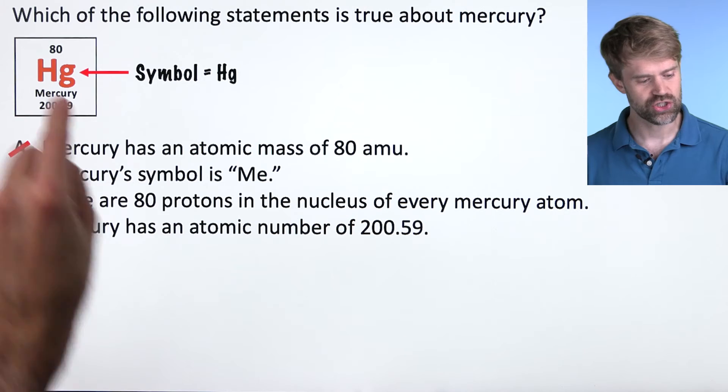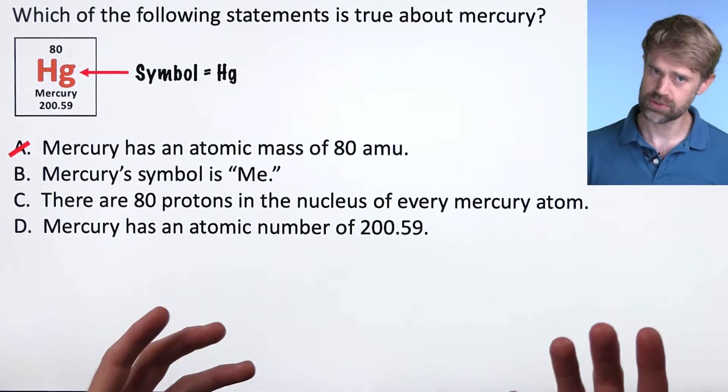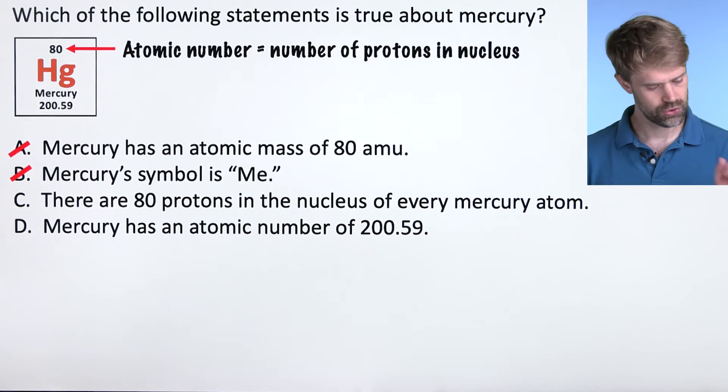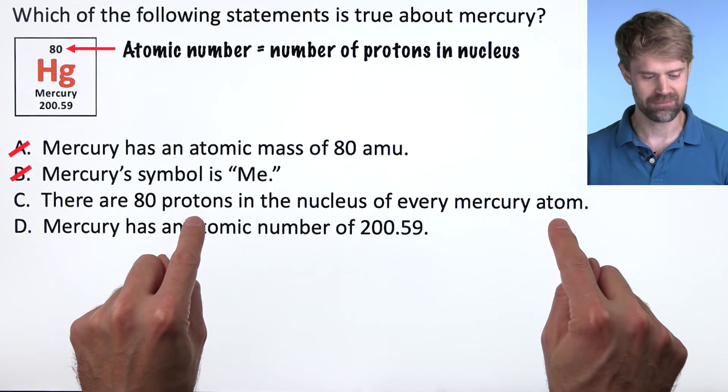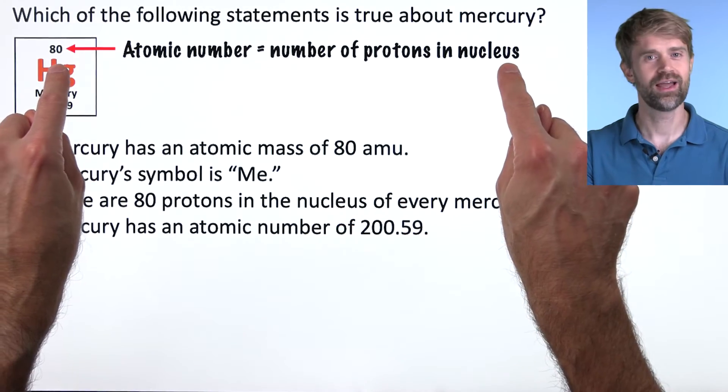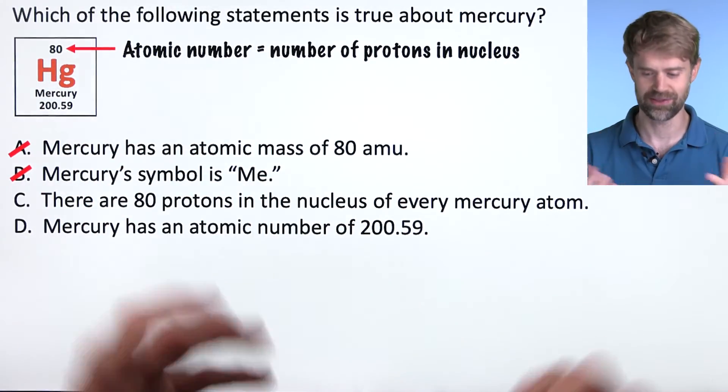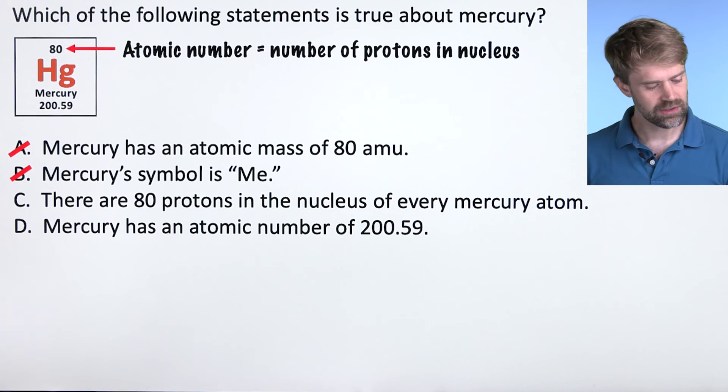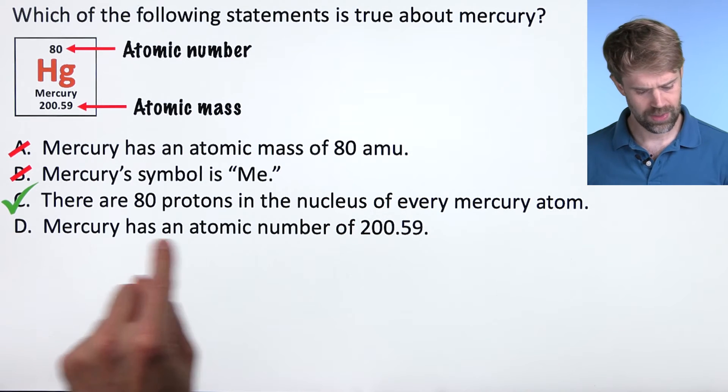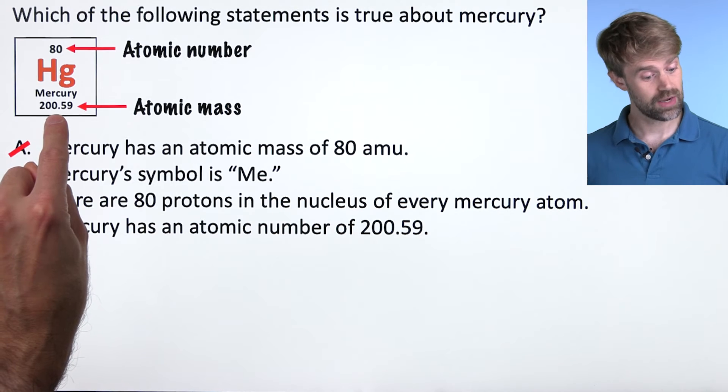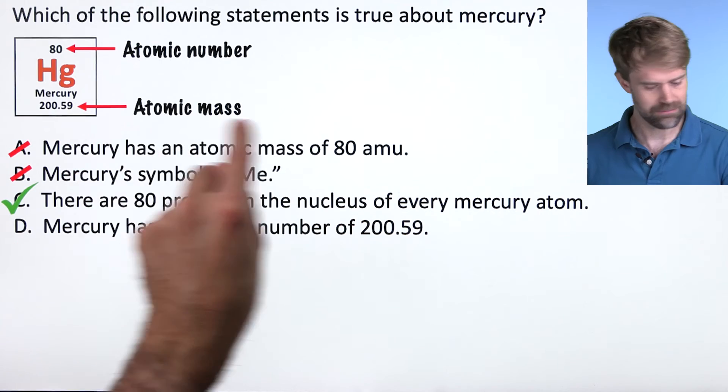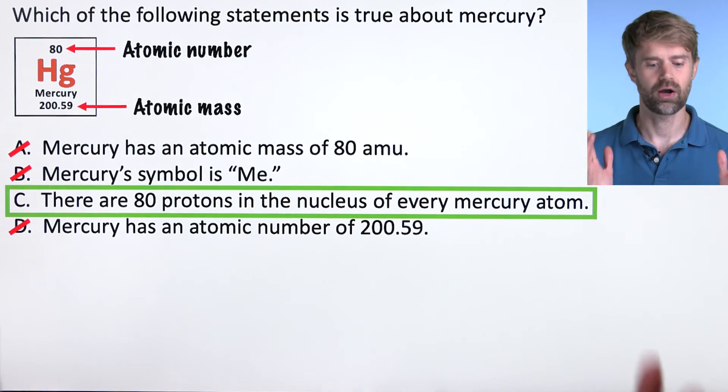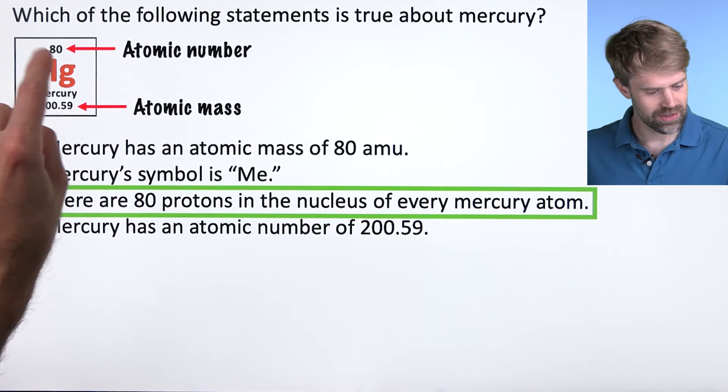Now, HG is a little weird for Mercury, but some of the symbols on the periodic table are like that. They're kind of weird and we talk about that in another video. Anyway, B is wrong, so cross it off. Choice C says there are 80 protons in the nucleus of every Mercury atom. Well, remember what atomic number means? It's the number of protons in the nucleus. This defines the element. So Mercury always has 80 protons in the nucleus. This is our correct answer, but let's just take a look at D to be sure. And it says Mercury has an atomic number of 200.59. That's the number down here. Remember we said we have these two numbers. The bigger number usually at the bottom is atomic mass, not atomic number. So D is wrong just like A was, and that means that C is definitely our correct answer. Every single Mercury atom in the universe has 80 protons in the nucleus.